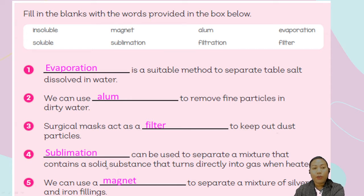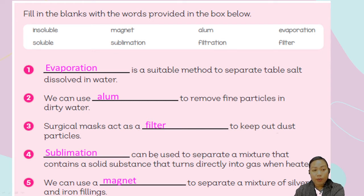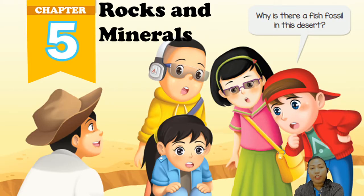All in all, you got five out of five! This was just a practice about our lesson on mixtures. I hope you won't forget those words and meanings. Now let us move on to our next lesson, which is rocks and minerals.